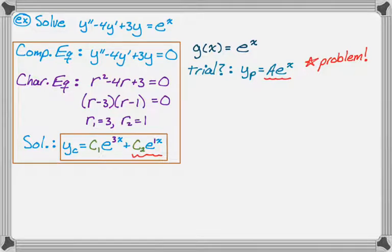So what we do instead is we take our trial, our supposed trial, and multiply through by x. So for our particular, we're going to use A times x e to the x. And this is actually going to work for us. So let's go through the problem and see how it works out.